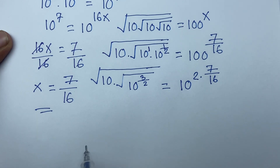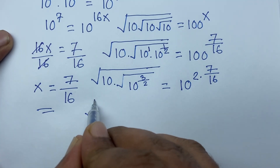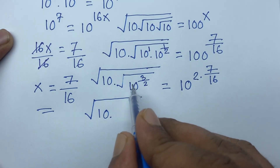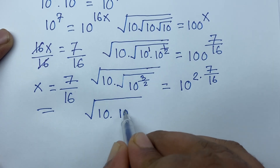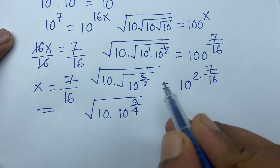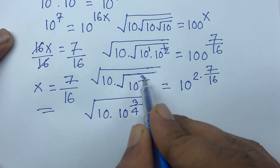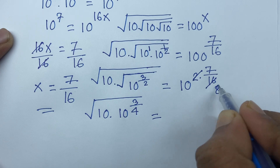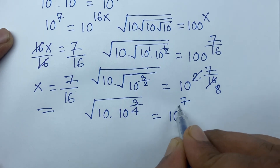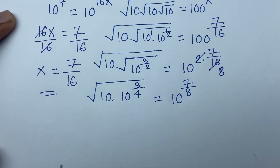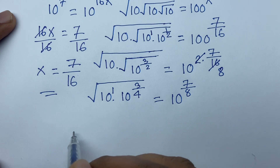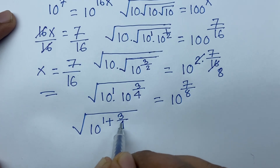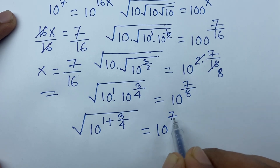Here is square root of 10 times 10 to the power 3 over 2, and applying the square root gives 10 to the power 3 over 4 — because half times 3 over 2 is 3 over 4. The right side becomes 10 to the power 7 over 8 since 16 divided by 2 is 8. So we have 10 to the power 1 plus 3 over 4 is equal to 10 to the power 7 over 8.